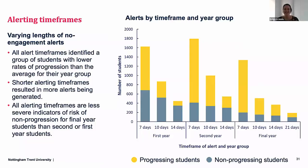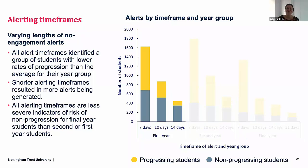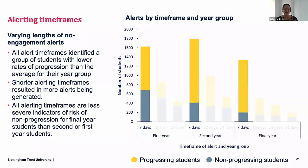In all cases alerts identified a group of students with lower rates of progression than the average for their year group. Shorter time frames of alerts resulted in a greater number of students generating alerts — identifying a greater number of non-progressing students (true positives) but also a greater number of progressing students generating alerts (false positives). So shorter time frames of alerts are less accurate indicators of non-progression than longer ones. Comparing the same length of alert across different year groups, alerts are less severe indicators of risk of non-progression for final year students than for second or first year students.